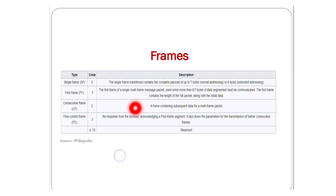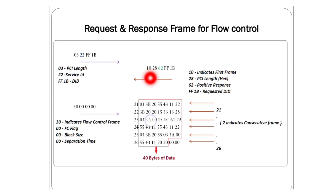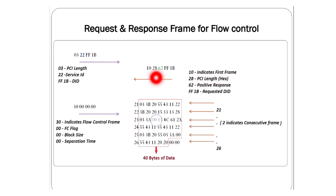What are 10 and 28? The prefix 10 indicates this is a first frame — code enumeration value 1. The first frame is used when more than seven bytes of data cannot fit in one frame. The first frame contains the full packet length along with the initial data. So 10 indicates 'first frame', and 28 in hex equals 40 in decimal — that is the PCI length.